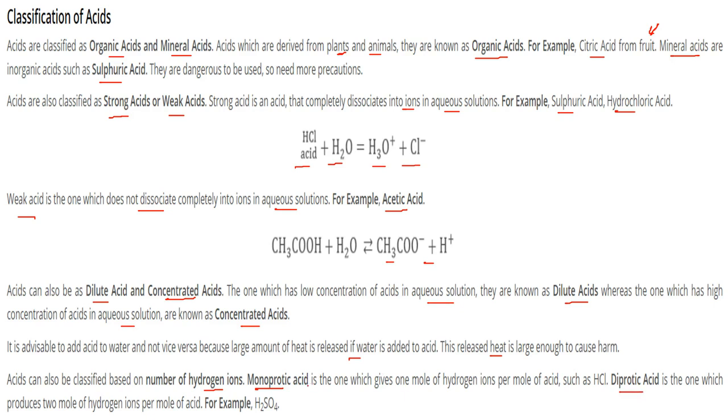Diprotic acids produce two moles of hydrogen ions per mole of acid, like sulfuric acid, while monoprotic acids give one mole of hydrogen ions per mole of acid.